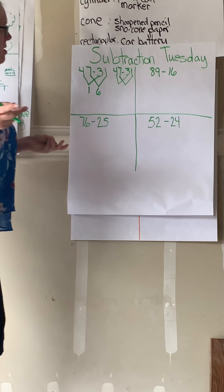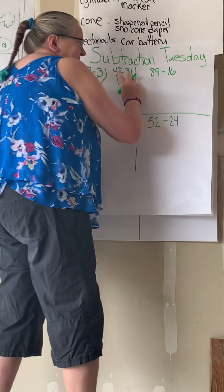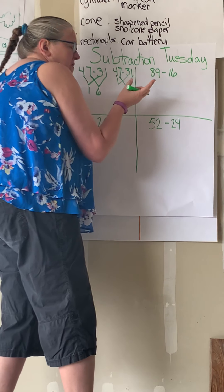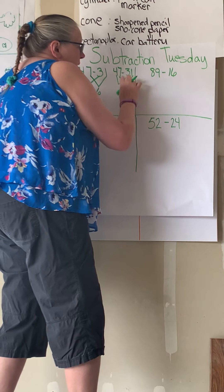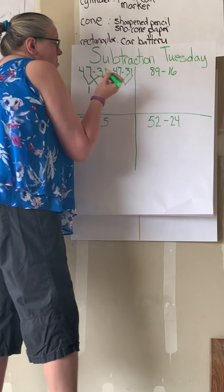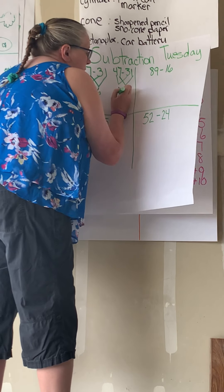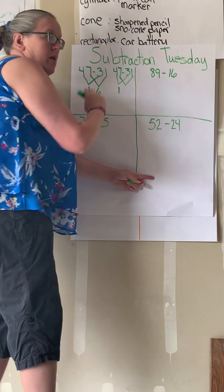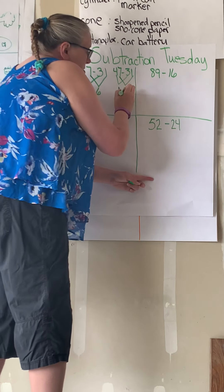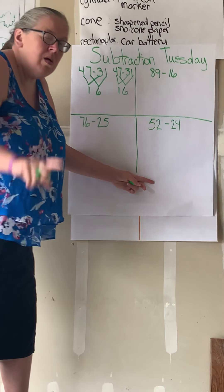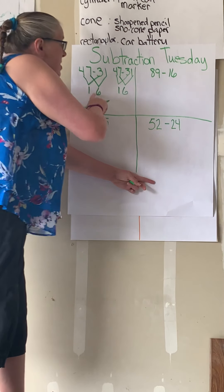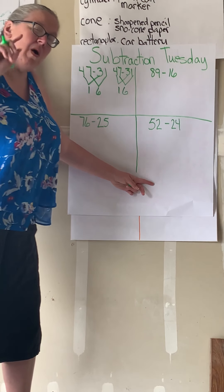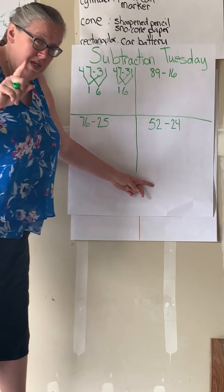Now let's go up here and try doing the tens first, just to see. Four minus three — that's one. Seven minus one — six. Well, they're the same as before. So what does it matter? This problem, they're the same. But let's see if they're all going to be the same.